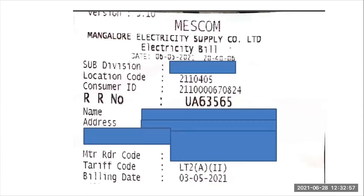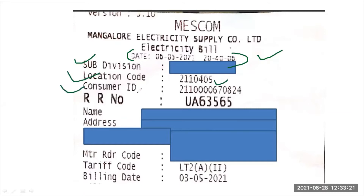MESCOM stands for Mangalore Electricity Supply Company. The bill specifies the duration of the billing period and the subdivision, which is the locality or location. There is also a location code, and depending on the customer, the ID will be different. You can see the customer ID here.